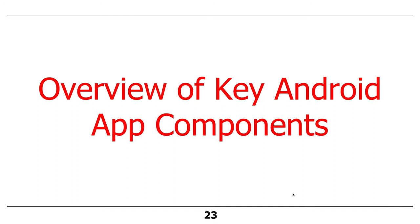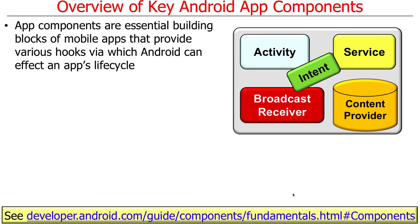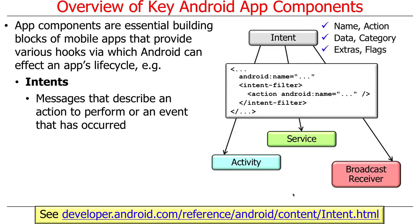Now, an overview of key Android app components. App components are basically what are used to build apps — there are four of them plus something that glues them together. The four things are: intents, which are messages sent back and forth to indicate something has happened or that you want something to happen — either a notification or a command. The intents are sent around by the other components: activities, services, and broadcast receivers.